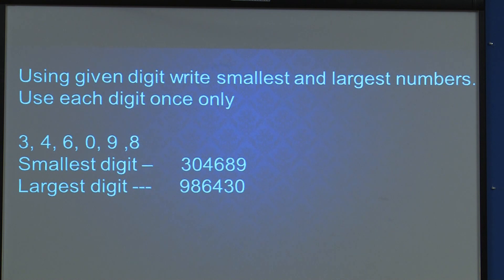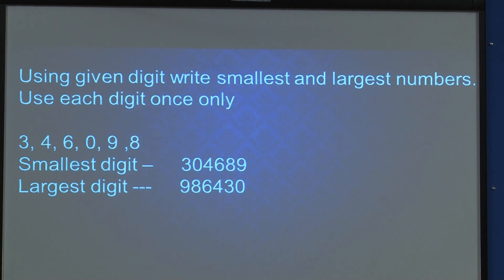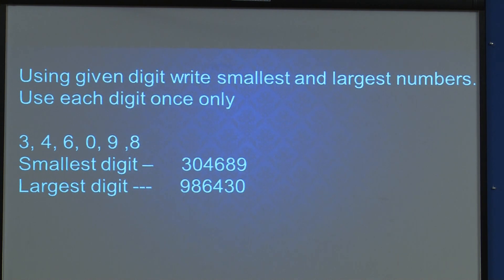The largest number starts with 9, then 8, then 6, then 4, then 3 and 0. You cannot write 0 before 3. So this is the reverse arrangement. Everyone understood what the largest and smallest numbers are?